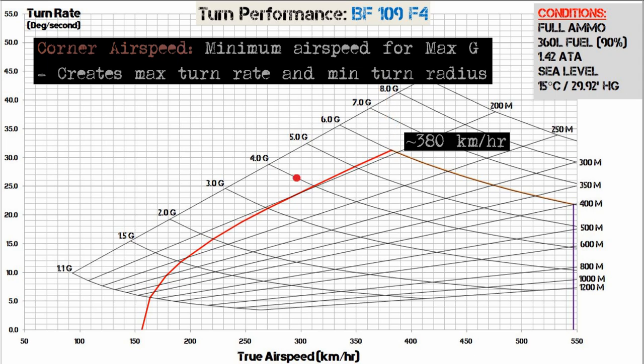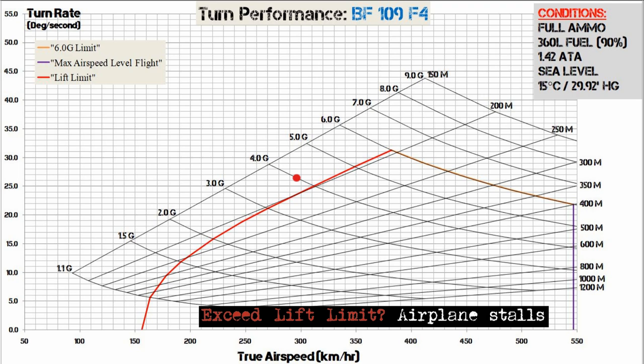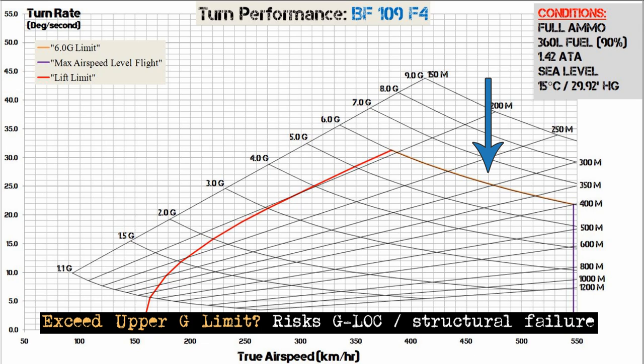If you're flying slower than corner airspeed and trying to pull 4G, that's actually less G than you could pull at corner airspeed, and the airplane will enter an accelerated stall. On the other hand, if you're flying faster than corner airspeed, you're restricted by your upper G limit, which negatively affects your turn radius and turn rate. Pulling beyond that limit could induce a pilot blackout or structural failure.